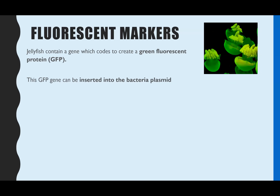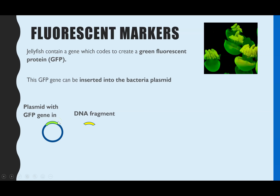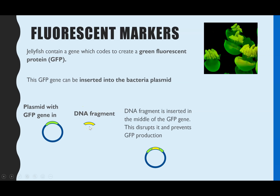The second method is fluorescent markers. This actually comes from jellyfish - some jellyfish naturally create a protein which is green and fluorescent, called GFP, green fluorescent protein. That gene has been isolated from jellyfish and inserted into a bacteria plasmid. Instead of using antibiotic resistant markers, we use this fluorescent protein gene as our marker. The DNA fragment is inserted deliberately right in the middle of that marker gene.